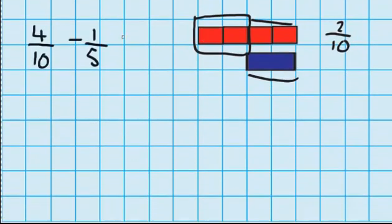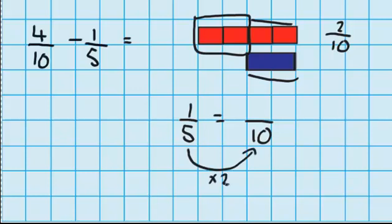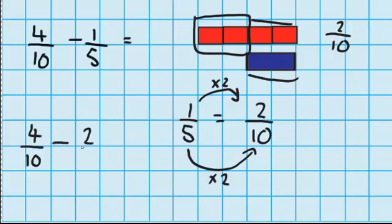Now let's look at how we could have done that without any materials. It's hard to do because the denominators are not the same, so we need to change them so that they are. One obvious solution is to change the fifths into tenths by making an equivalent fraction. What is one fifth in tenths? Well I know that to change fifths into tenths I must have multiplied the denominator by two, so I'd have to multiply the numerator by two as well. Two times one is two, so I know that one fifth and two tenths are equivalent. So I go back to my question: I've got four tenths and I'm going to take away two tenths, because we worked out that two tenths is equivalent to one fifth. So four tenths minus two tenths leaves me with two tenths — exactly the same as what we got using materials.